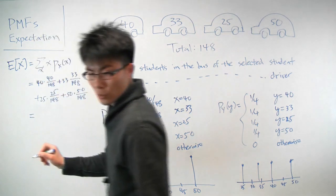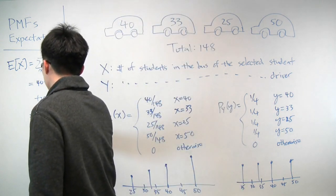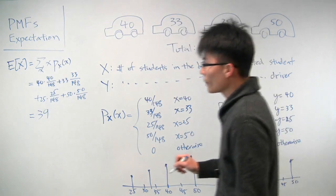Plus 25 times 25 over 148 plus 50 times 50 over 148. And if you do out this calculation, what you'll get is that it is around 39, roughly 39.